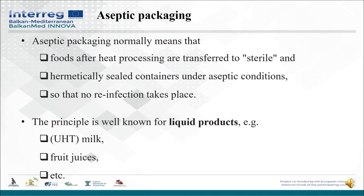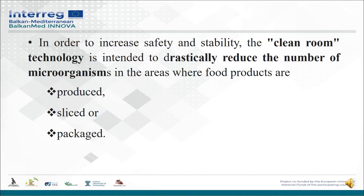Let's now consider aseptic packaging, which normally means that foods after heat processing are transferred to sterile and hermetically sealed containers under aseptic conditions so that no recontamination can take place. The principle is well known for liquid products, for example in the case of UHT milk, fruit juices, etc. In order to increase safety and stability, cleanroom technology is intended to drastically reduce the number of microorganisms in the areas where food products are produced, sliced, or packaged.